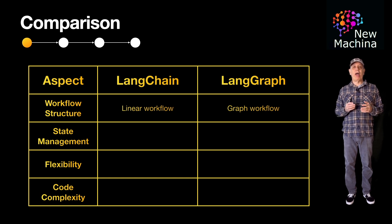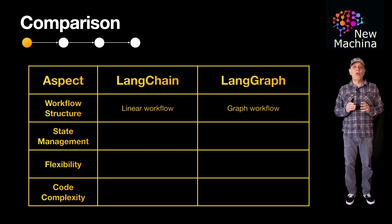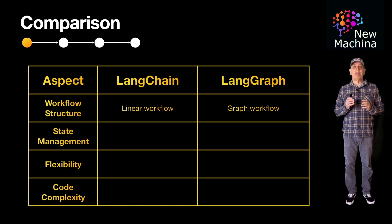DAG stands for Directed Acyclic Graphs. Think of this as a data structure with no iterations, loops, or cycles. You can think of LangChain as executing a chain of steps in an LLM-driven workflow. LangChain does support simple branching, but does not explicitly support iterations or cycles.